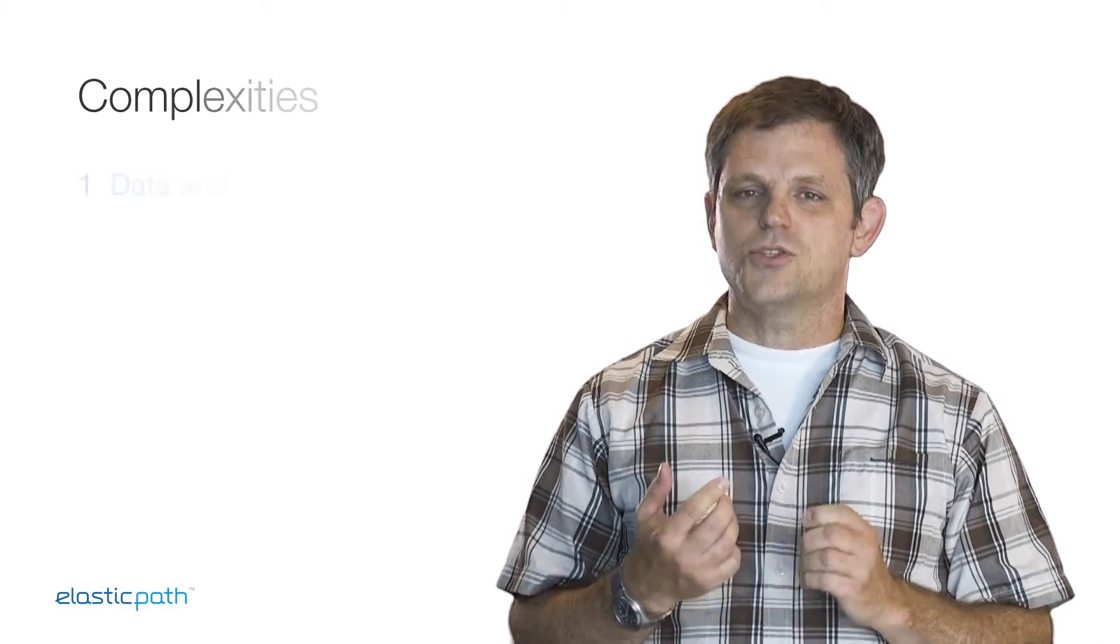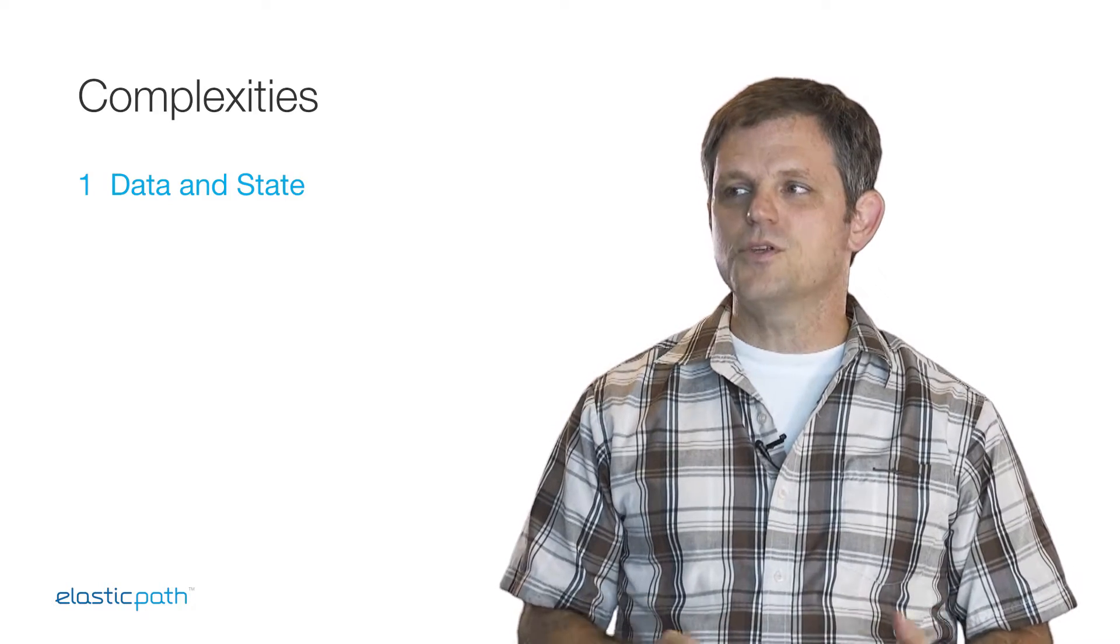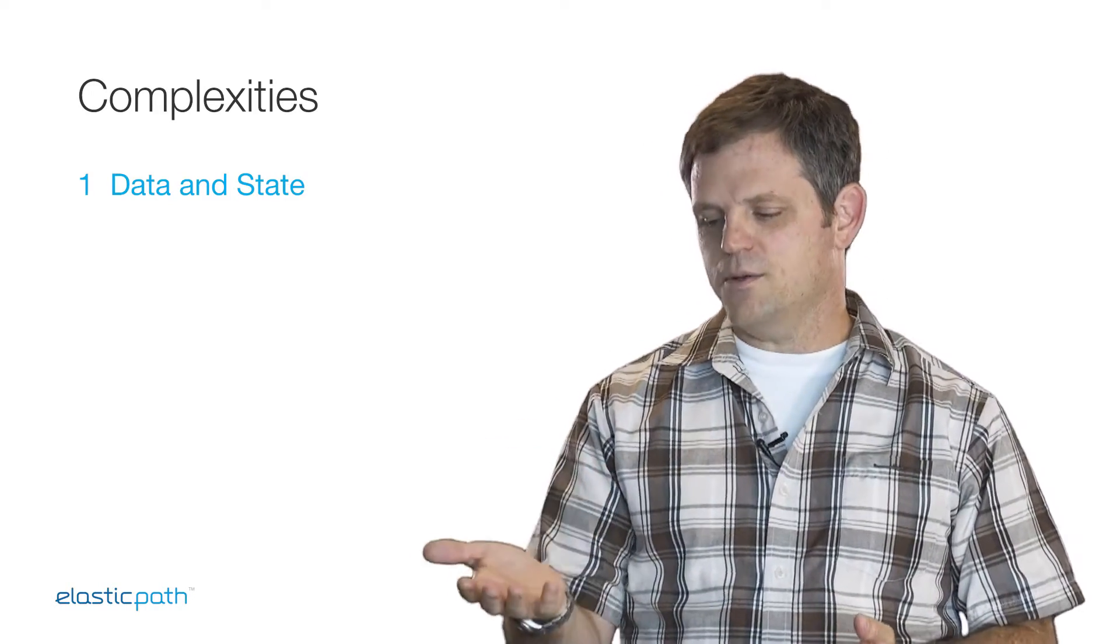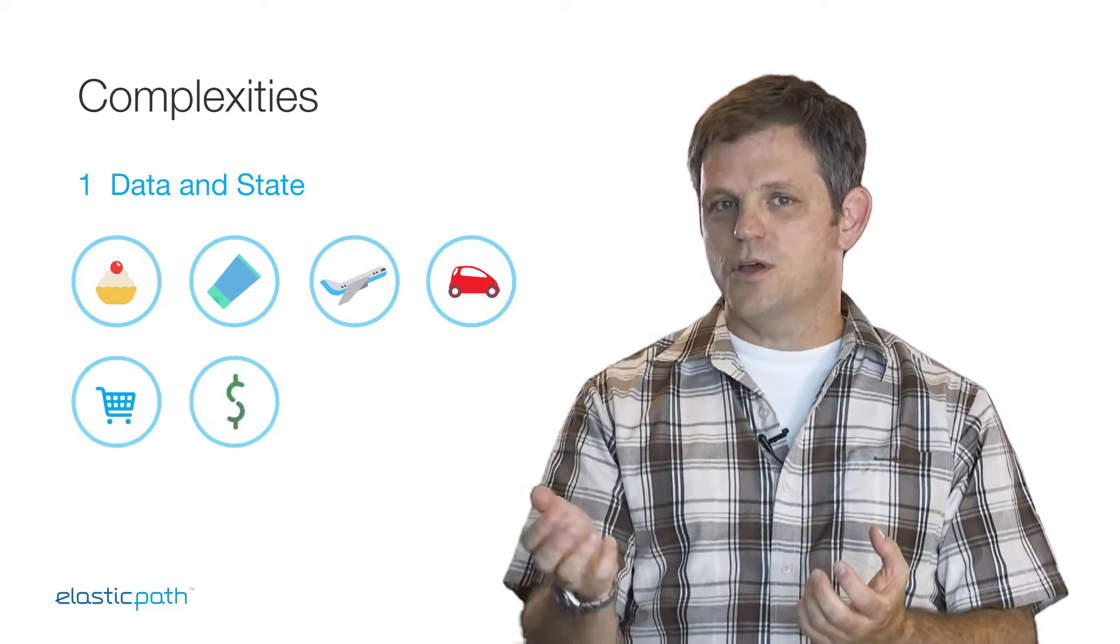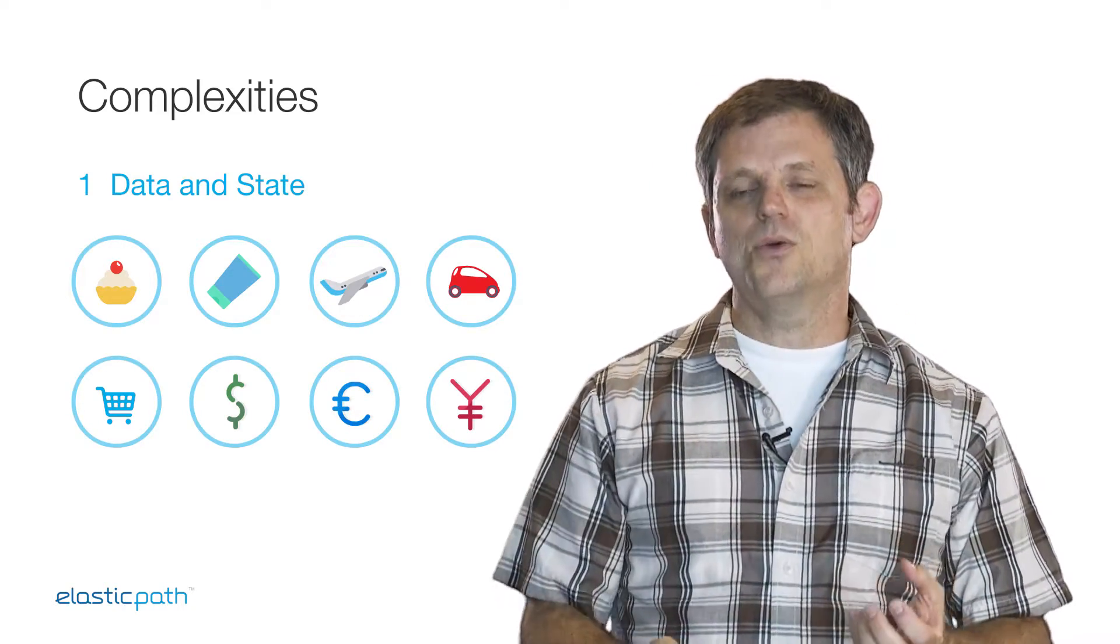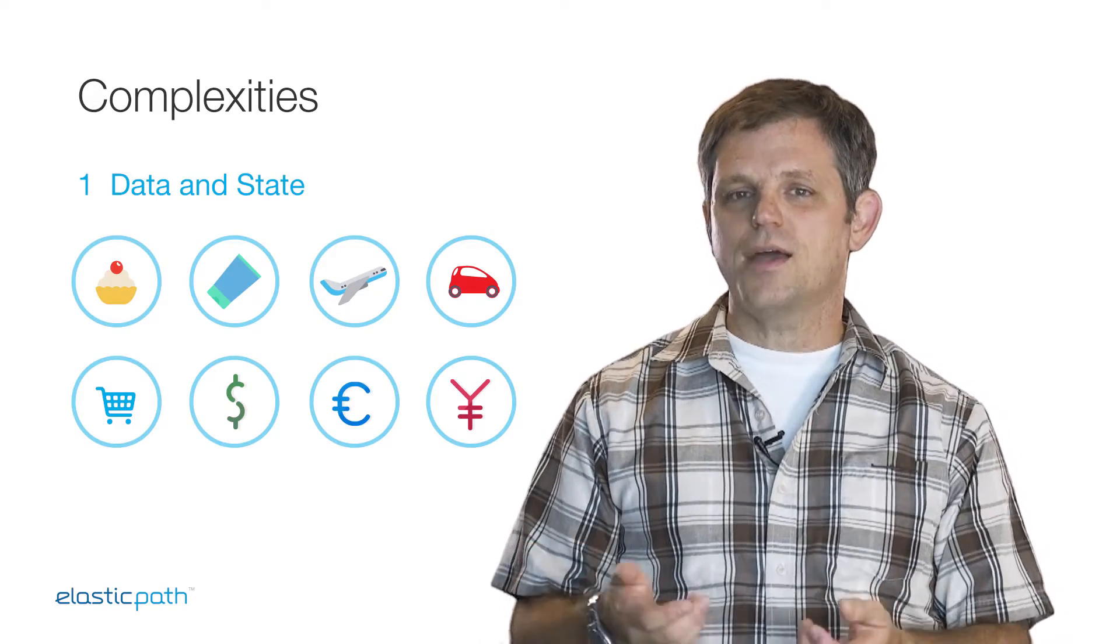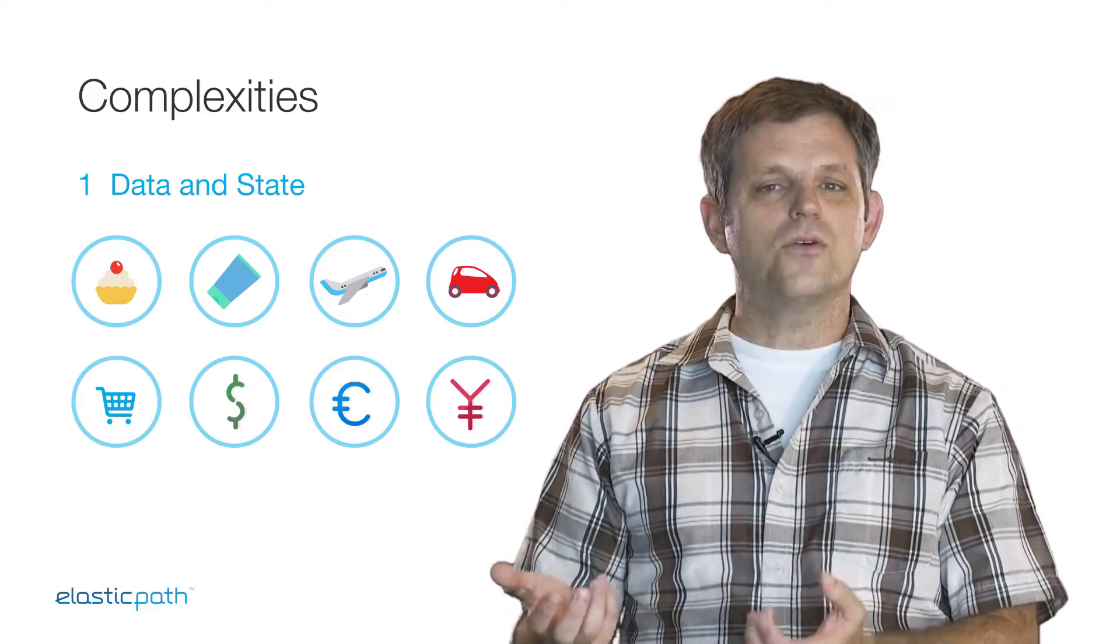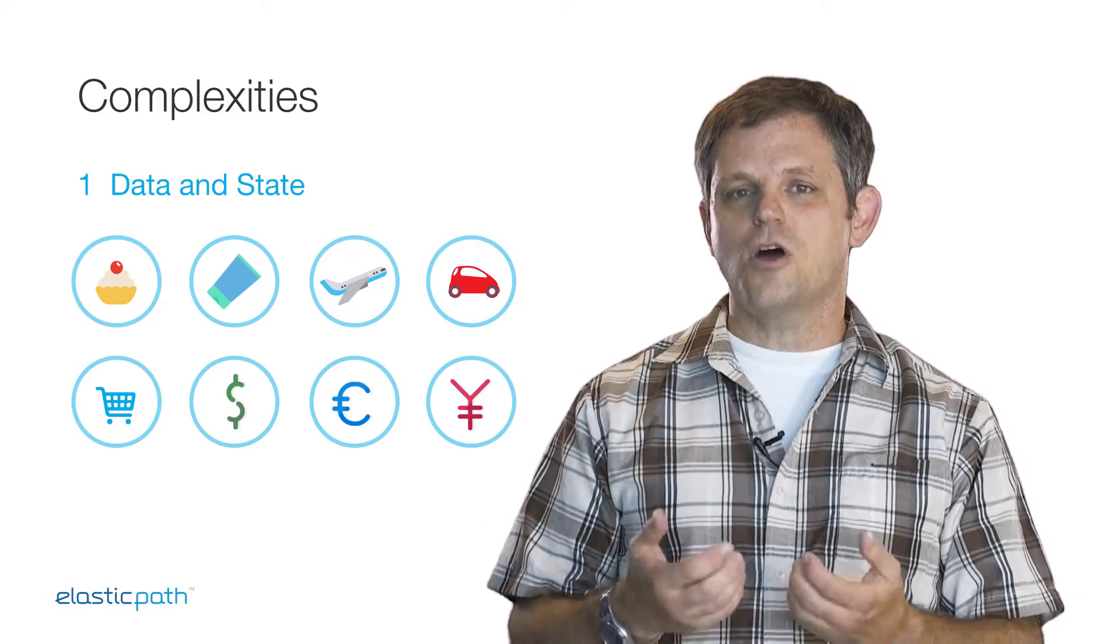The first is state. There is lots of data and state in commerce. You have many interacting domains. You have items, you have prices, you have the customer's cart, you have their preferences for currency and shipping, you have taxes and many, many more. Each one of these impacts the other. Each one of these has orchestrations with other pieces of the domain that have to work together to provide this commerce experience.